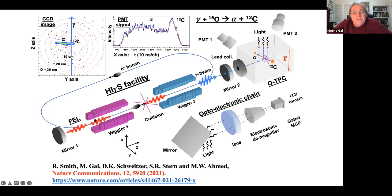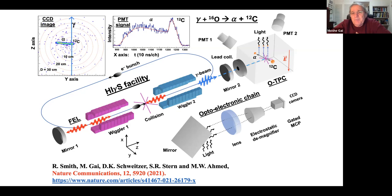A second electron bunch placed at half the ring distance meets the gamma beam on its return and does Compton scattering, boosting the free electron laser light up to 10 MeV - creating a quasi-monochromatic gamma beam. This beam is sent to the TPC (Time Projection Chamber) detector to perform nuclear photodissociation.